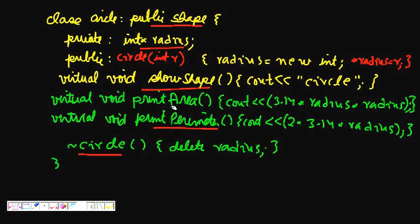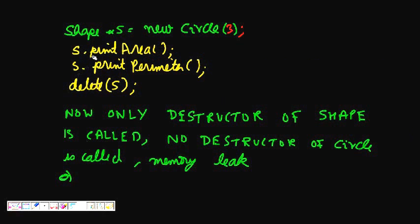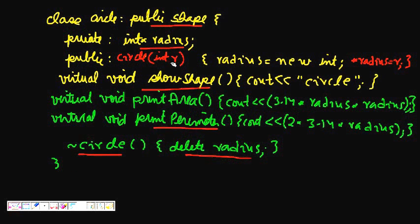Now I write a destructor where it is very important. I had created taken some memory int star radius, so I make a new int, now I'm deleting radius. This looks fine to me. When I call Shape star s is equal to new circle, I call it with 3.